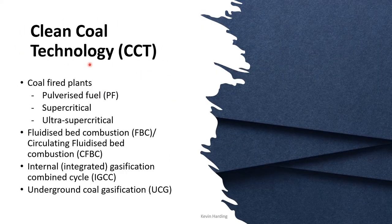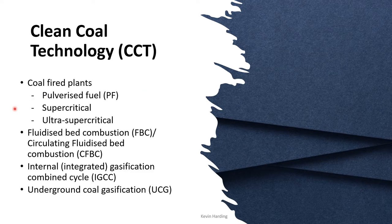For clean coal technology, we need to understand the different ways of burning coal. The typical way is pulverized fuel (PF) — crush the coal into small pieces and burn it. More modern approaches include supercritical or ultra-supercritical firing. Another way is fluidized bed combustion (FBC) or circulating fluidized bed combustion (CFBC). You will see these abbreviations frequently in notes and tutorials.